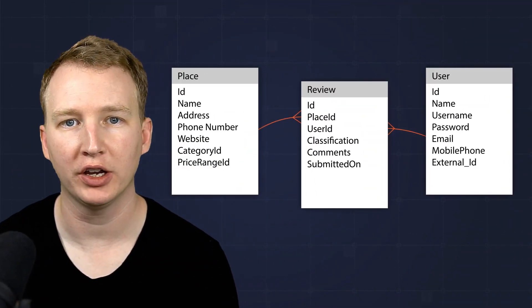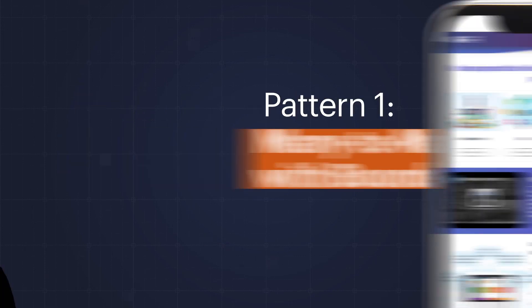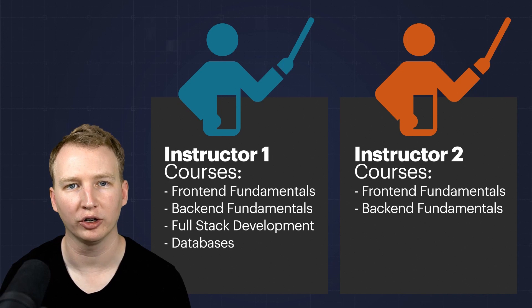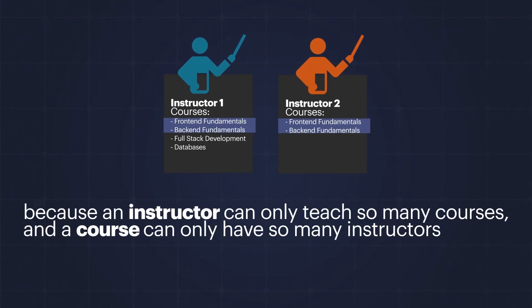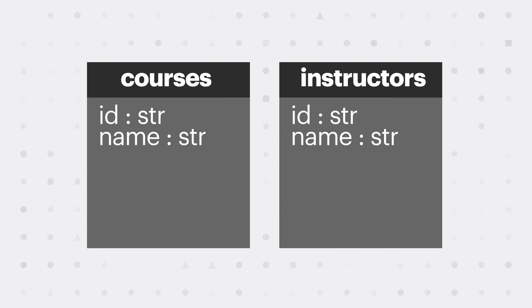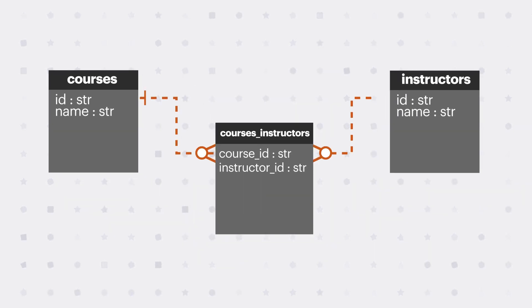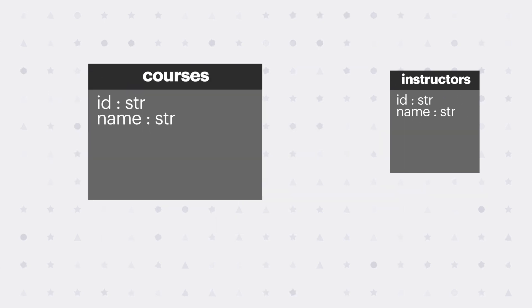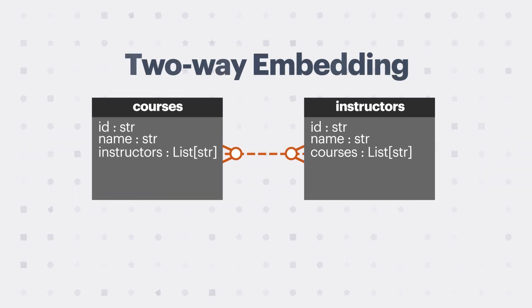Many-to-many relationships are very common and can be modeled in several different ways using NoSQL. Here are the two most common patterns. Imagine you're creating an app for an online school that has courses and instructors. There's a many-to-many relationship between instructors and courses, but it's bounded because an instructor can only teach so many courses and a course can only have so many instructors. In a relational database, you might have a table called courses and another called instructors, then a junction table called courses-instructors. In NoSQL, you can simplify this by embedding a list of instructor keys in each course document and a list of course keys in each instructor document. This is known as two-way embedding.